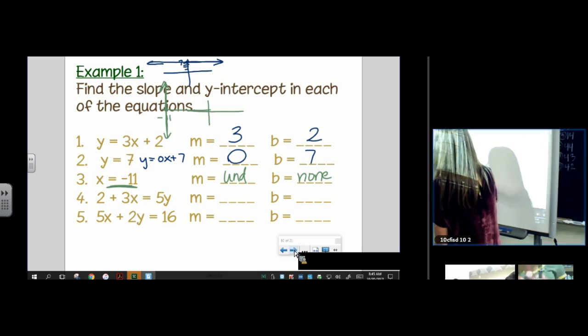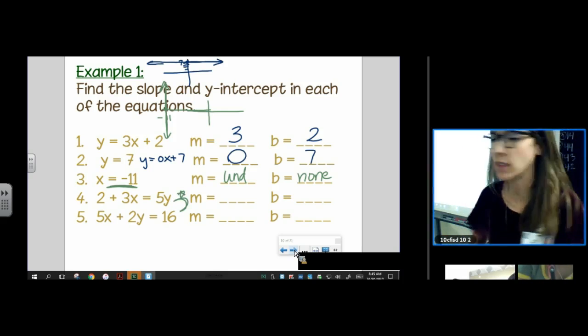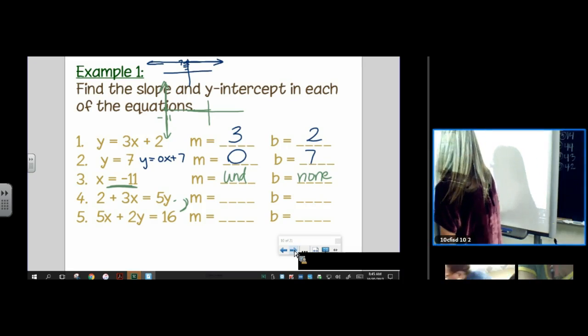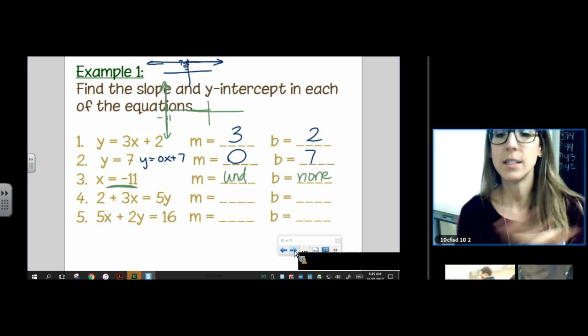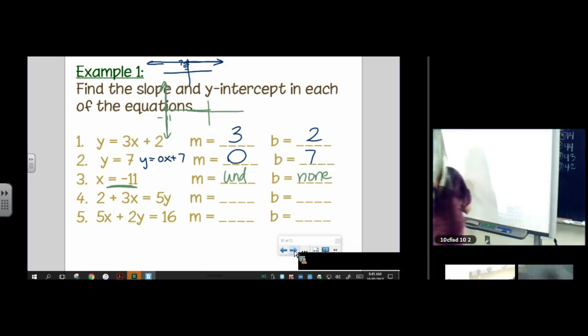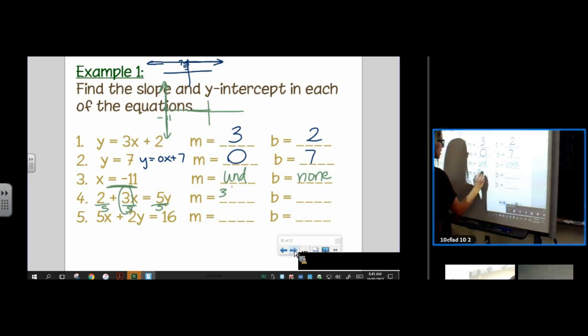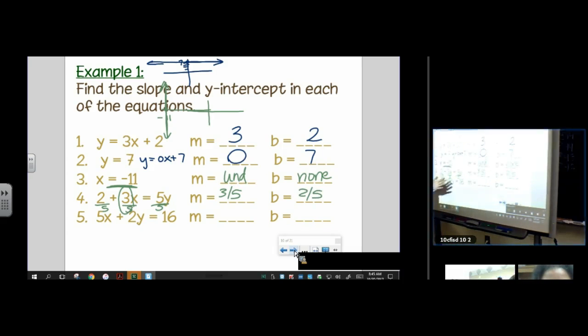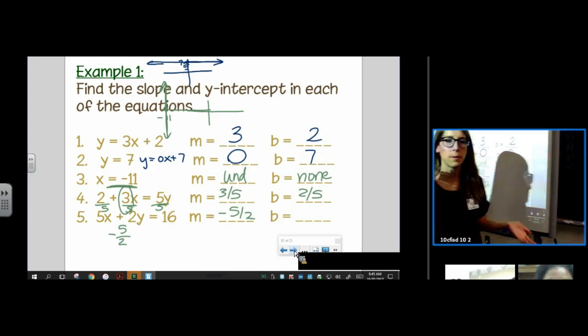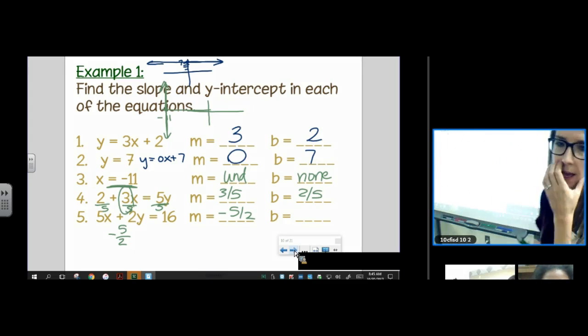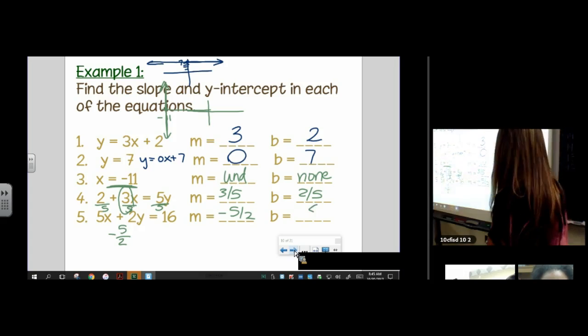Neither of these are in standard form. Oh sorry, the last one is. Number four is not in standard form. So don't try to use your trick. Just make sure you solve for y. So I'm going to divide everything by five. So the slope is three fifths. The y-intercept is two fifths. And then here I could use my new trick. Negative a over b for my slope. But then to get my y-intercept I would kind of still have to do the work. It'll be eight fifths.